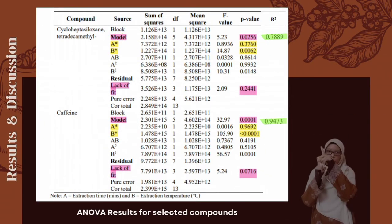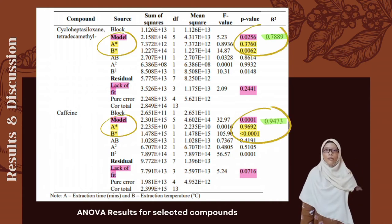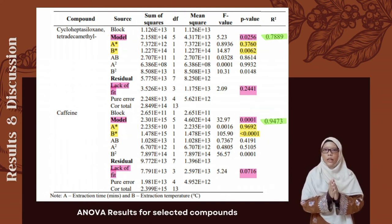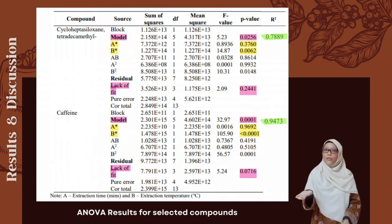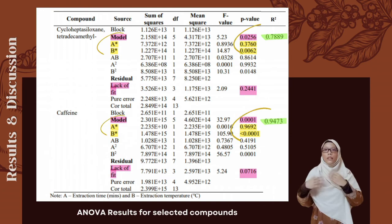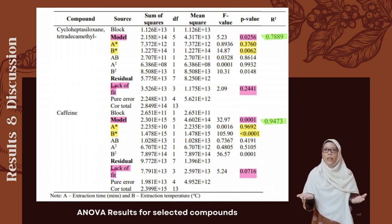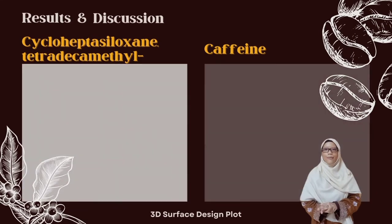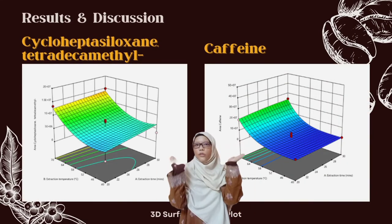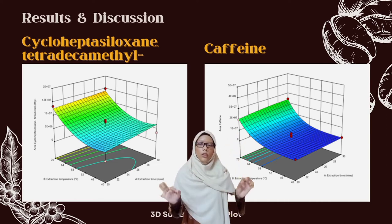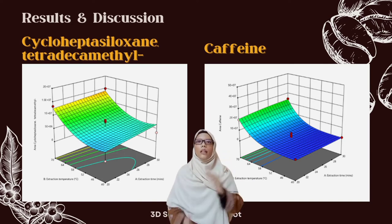The ANOVA results show that the model is significant while the lack of fit is insignificant. Coupled with a high value of the coefficient of determination (R²), we can conclude that there is a good fit of data to the model and the model is valid. Extraction temperature (B) has a p-value less than 0.05, meaning it is significant, while extraction time (A) has a p-value greater than 0.05, indicating it has no significant effect on SPME efficiency. This can be observed in the 3D surface design plot, where the output increases as extraction temperature increases, but remains constant or increases only insignificantly as extraction time increases.